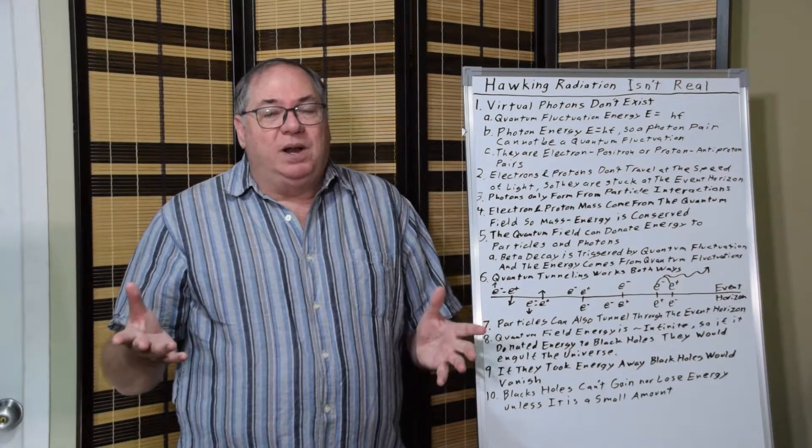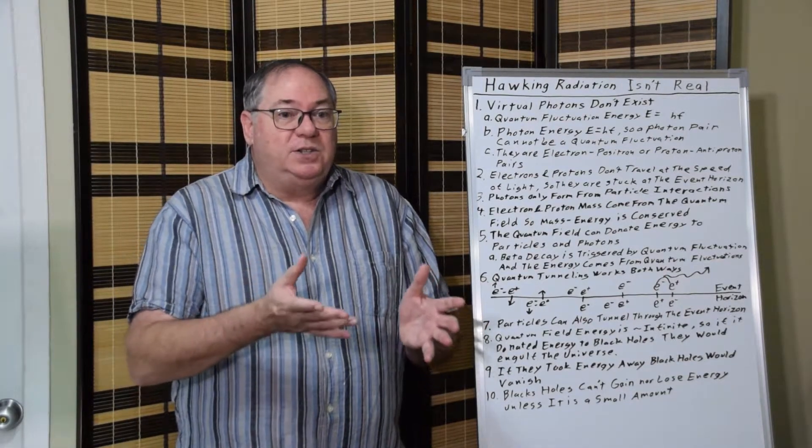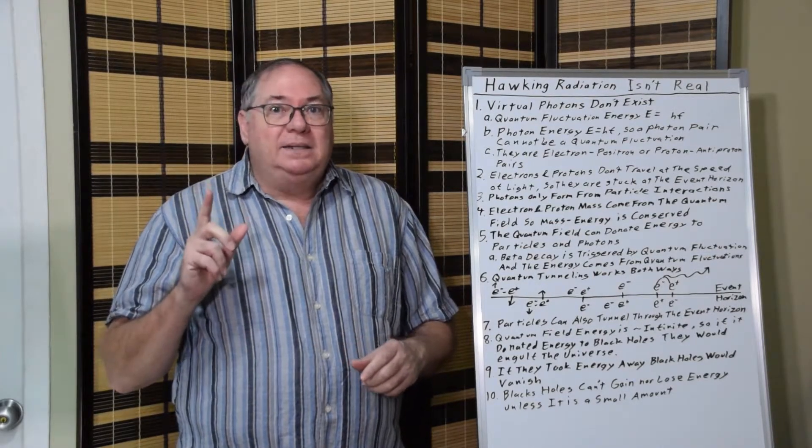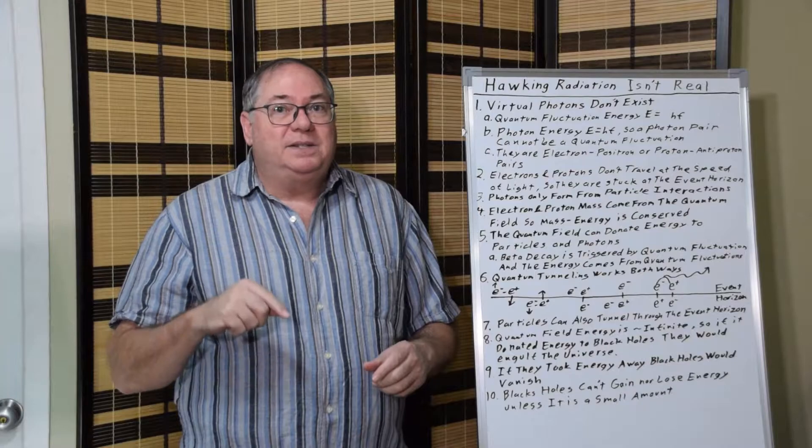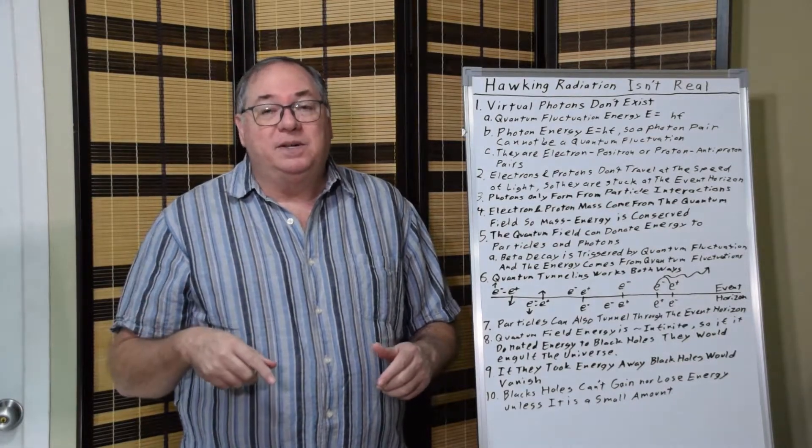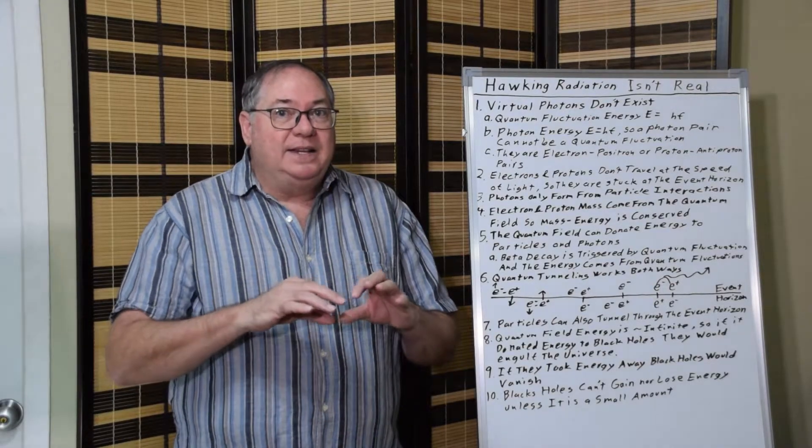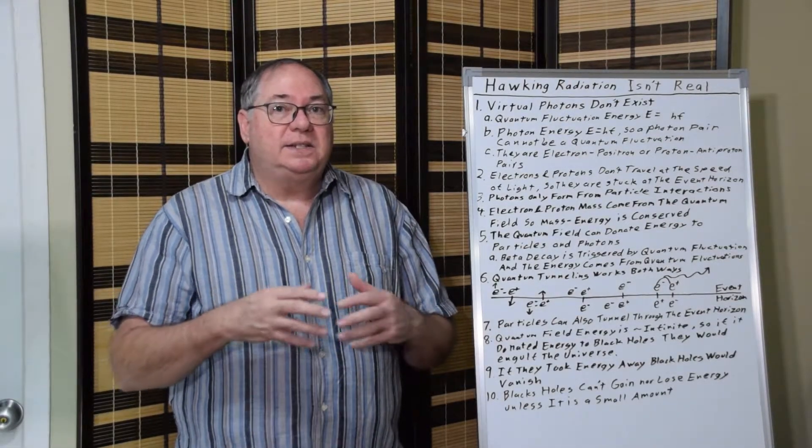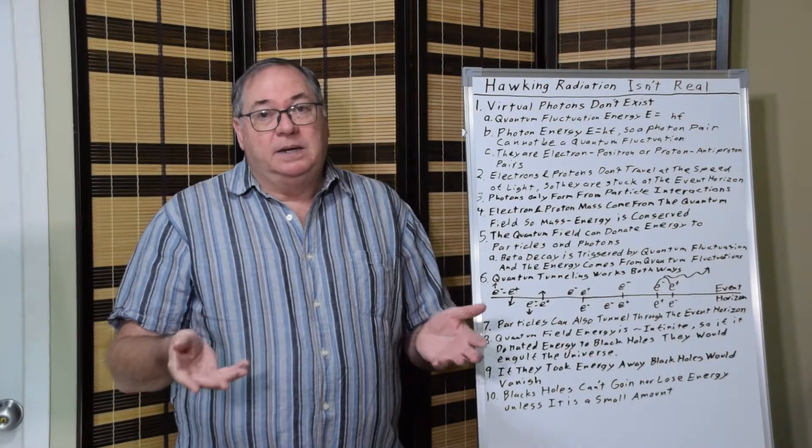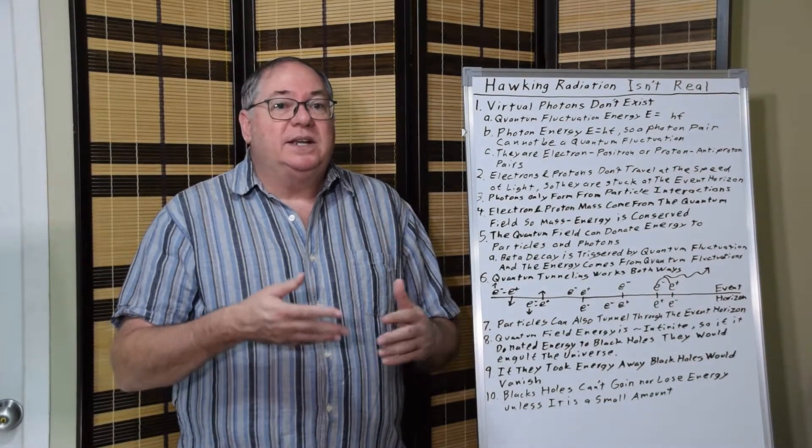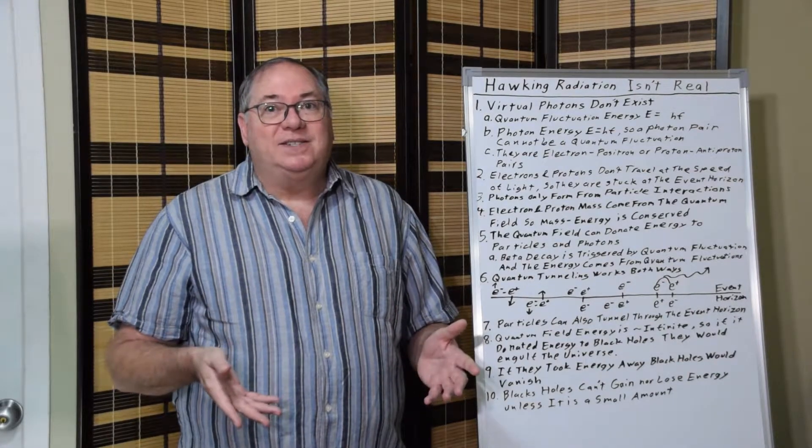So that's what the real quantum fluctuations are. So that's what we have to deal with. But electrons and positrons and protons and antiprotons don't travel at the speed of light, and anything that's at the event horizon has its clock rate slope to effectively zero. So unless it can travel at the speed of light, it can't escape the event horizon.